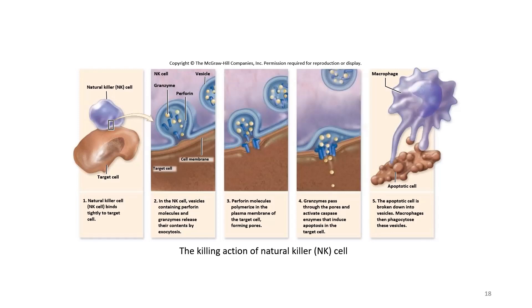This diagram illustrates how natural killer cells function. The purple cell is the NK cell, which tightly binds to the target cell — such as a tumor cell or virus-infected cell. Once bound, vesicles containing perforin and granzyme molecules are released by exocytosis. Perforin polymerizes in the plasma membrane of the target cell, forming pores. Granzymes pass through the pores and activate caspase enzymes, inducing apoptosis. The apoptotic cell is broken down into vesicles, which are then phagocytosed by macrophages.